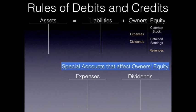We're going to go through and discuss what makes assets go up, what makes liabilities go up, and so on. Also recall that assets is not an account, it's a category. Liabilities is not an account, it's a category. Owner's equity is not an account — it's a category of accounts.